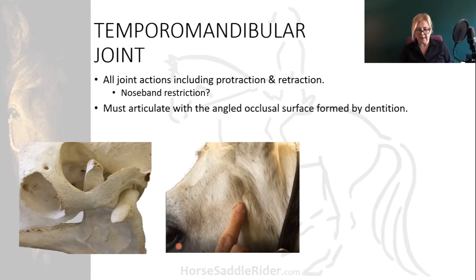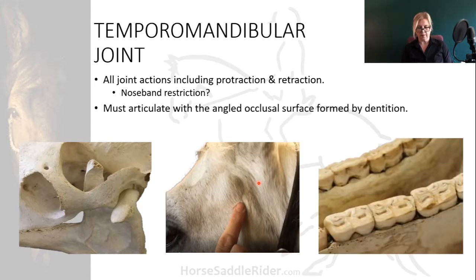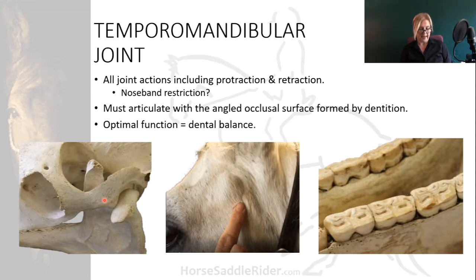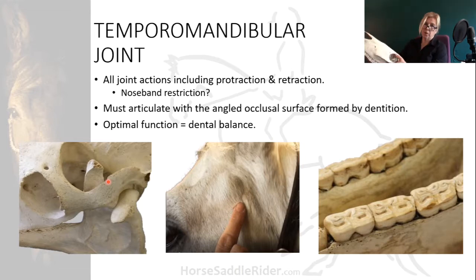In this picture you can see the joint line, almost in line with the eye. These are the surfaces of the teeth that are angled. This joint can extend, flex, rotate and circumduct, and when the head is lowered the mandible moves into protraction.